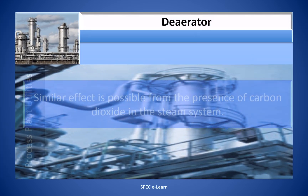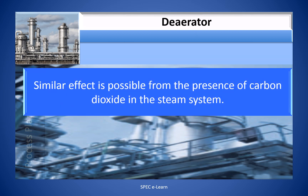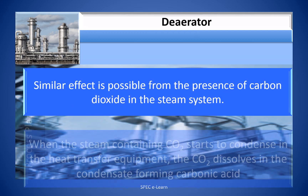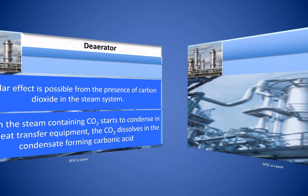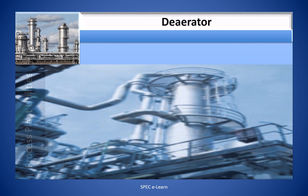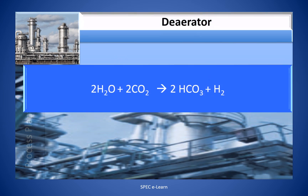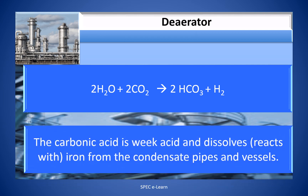A similar effect is possible from the presence of carbon dioxide in the steam system. When steam containing CO₂ starts to condense in the heat transfer equipment, the CO₂ dissolves into the condensate forming carbonic acid: 2H₂O + 2CO₂ → 2H₂CO₃ + H₂. The carbonic acid is a weak acid and dissolves iron from the condensate pipes and vessels.